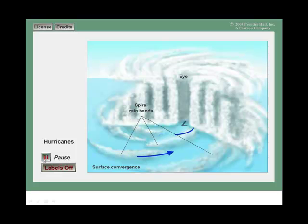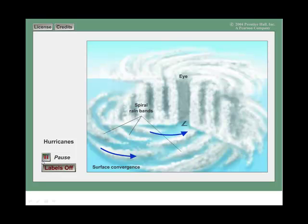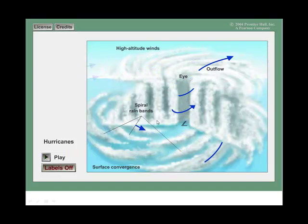You can see the spiral rain bands are close to the Earth's surface. It kind of spirals up here, moving up around the - this is going to be the eye, well it already says eye up here - and ultimately you have outflow.